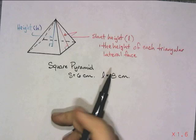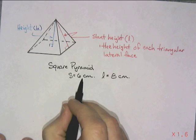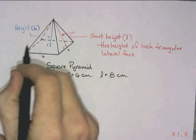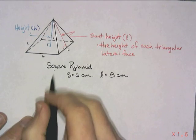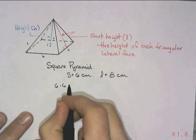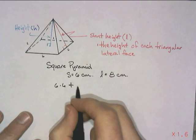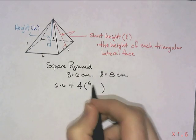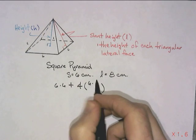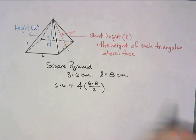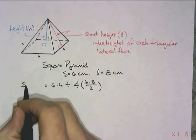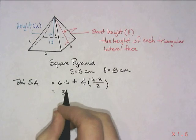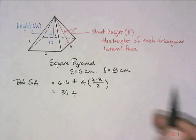And you need slant height to find the area of those triangles. And if this was a square pyramid with side lengths of 6 and a slant height of 8, well, that's going to be 6 here, 6, 6, 6, 6. And of course, the area of the base is just 6 times 6 plus we're going to have four triangles. And those four triangles are going to be base times height divided by 2. And the base is going to be 6. The height, the slant height is going to be 8. And we're going to divide that by 2.